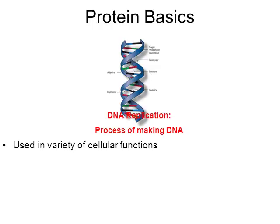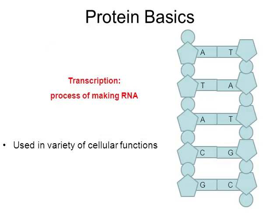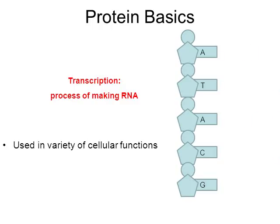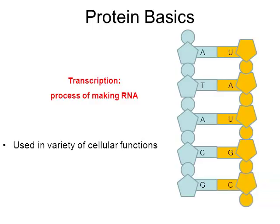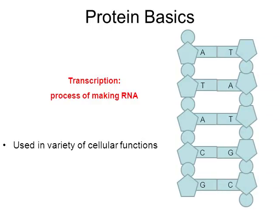Later on in the school year, we're going to learn about a process called DNA replication. This is the process where one DNA molecule is copied into two DNA molecules, and this process requires the use of proteins. Another example of a cell process that requires proteins is transcription, where RNA is created. There are special proteins that break apart a DNA molecule, and then orange RNA molecules attach to the DNA, break away, and other special proteins join the DNA back together. So there are all kinds of needs for proteins.